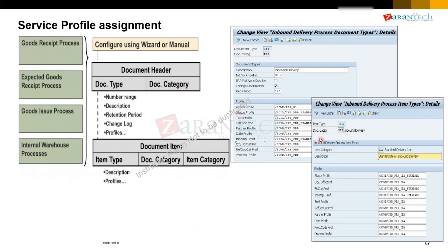Profiles are assigned either to the document type or to the item type based on the control level. For item-level control, assign to the item type; action profiles are not applicable at item level — they apply at header level. For header field control, assign to the header document type. These screenshots show native standard ones — in a real implementation you would prefix profiles with Z or Y. The document type itself would be Z or Y. Any questions?